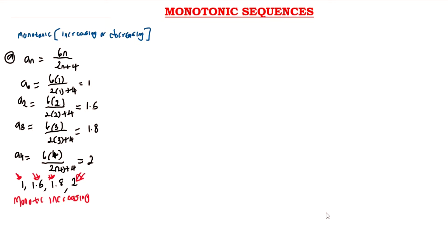Sometimes you may be asked to prove that the sequence is indeed increasing. To prove this, we need to show that a_n ≤ a_{n+1}, meaning the previous term is always less than or equal to the next term. So we need to prove that 6n / (2n + 4) ≤ a_{n+1}.